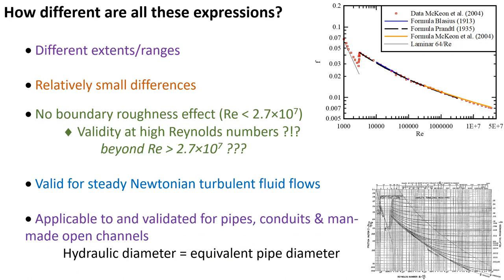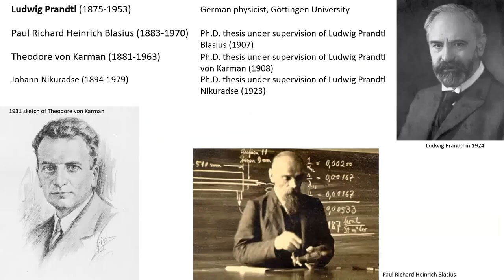These results are valid for steady Newtonian turbulent fluid flow, applicable to pipes, conduits, and man-made channels, using the hydraulic diameter equivalent pipe diameter in the definition of the Reynolds number. One would note the key contributions on smooth turbulent flow from German scientists, in particular, Ludwig Prandtl and his PhD students Heinrich Blasius, Theodor von Karman, and Johan Nikuradse.